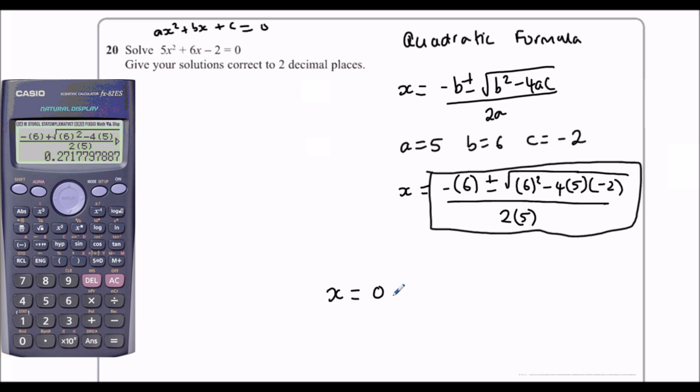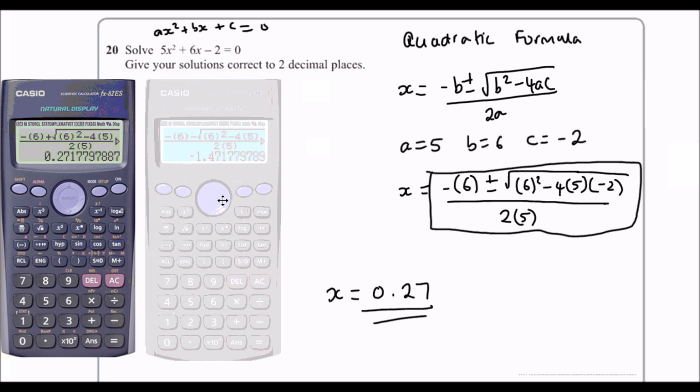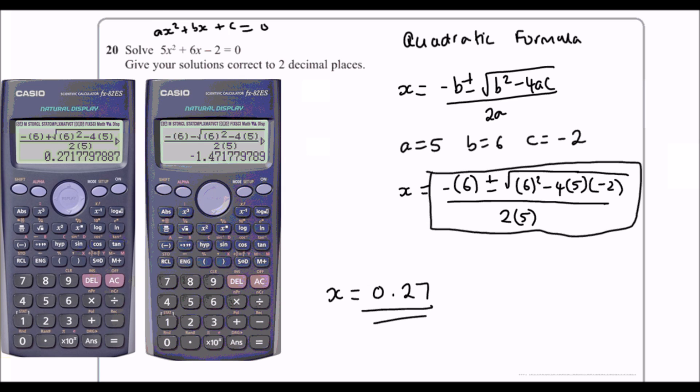And then to two decimal places, that gives me 0.27. Then I'm going to go back in, so I'll press the back button until I reach the plus, delete it, change it to a minus, and then press equals again. And that is minus, to two decimal places, 1.47.